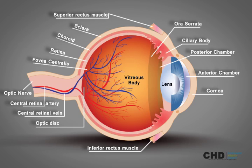The cornea is the transparent front part of the eye that covers the iris, pupil, and anterior chamber. The iris is a thin, circular structure in the eye, responsible for controlling the diameter and size of the pupil.